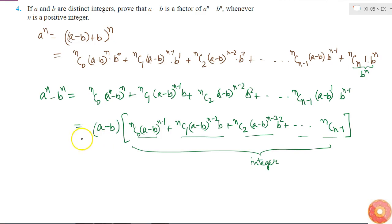Because if I divide a^n - b^n by (a-b), I will get the quotient as an integer and the remainder as 0. That means that (a-b) is a factor of a^n - b^n.